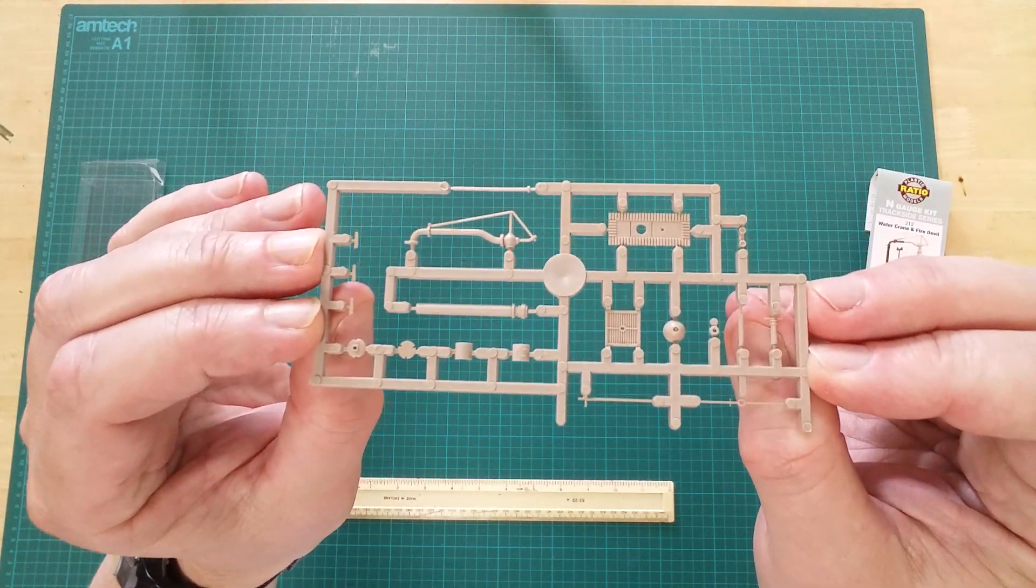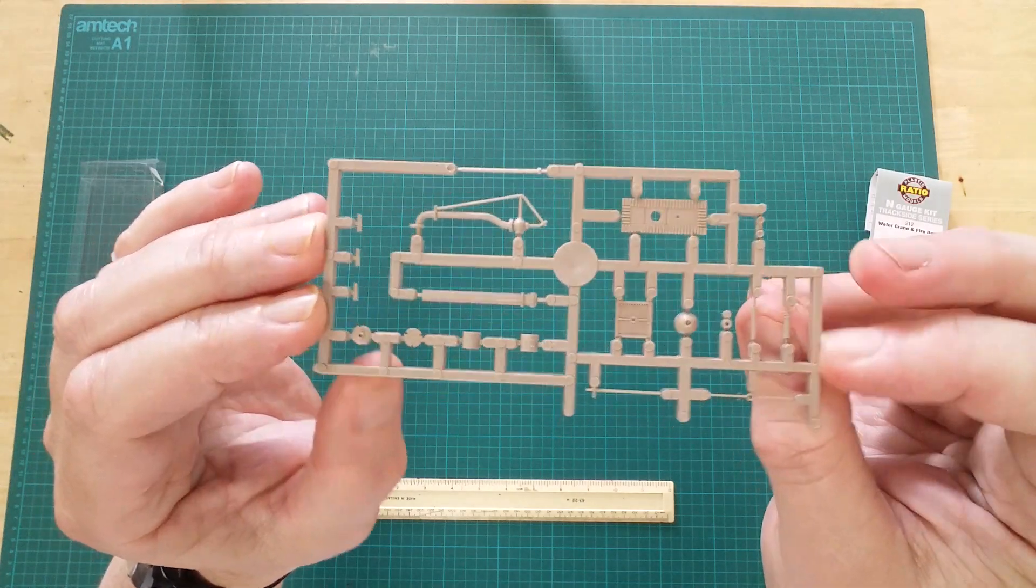Here we see the component parts for the Fire Devil with the base and body of the water crane.